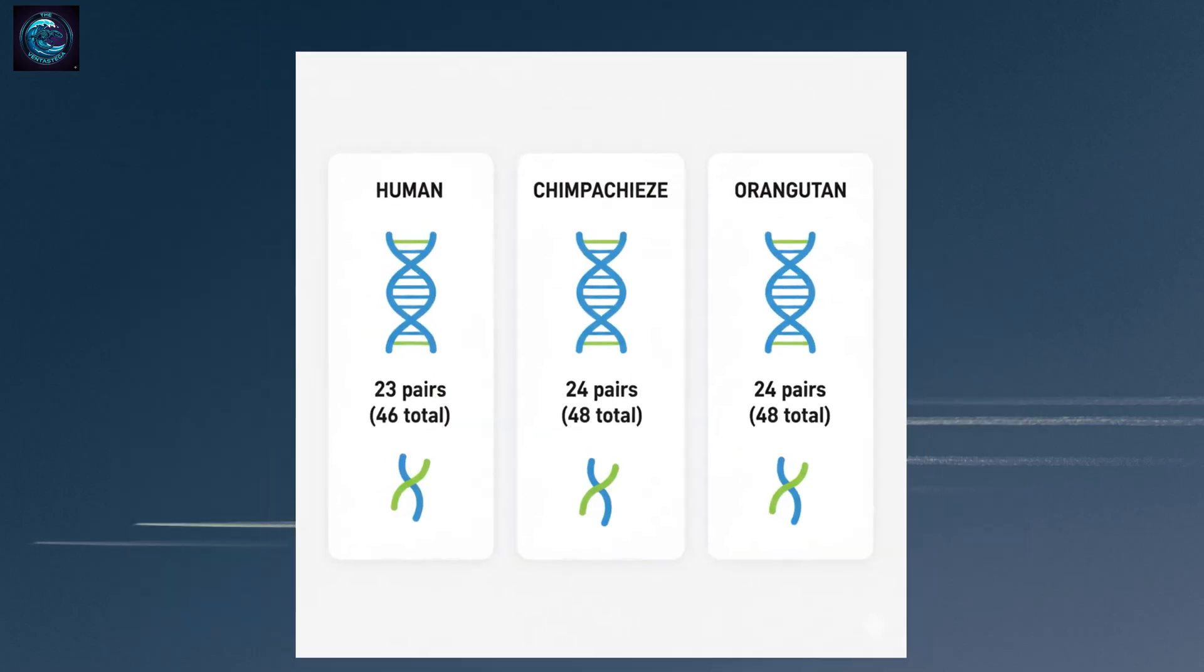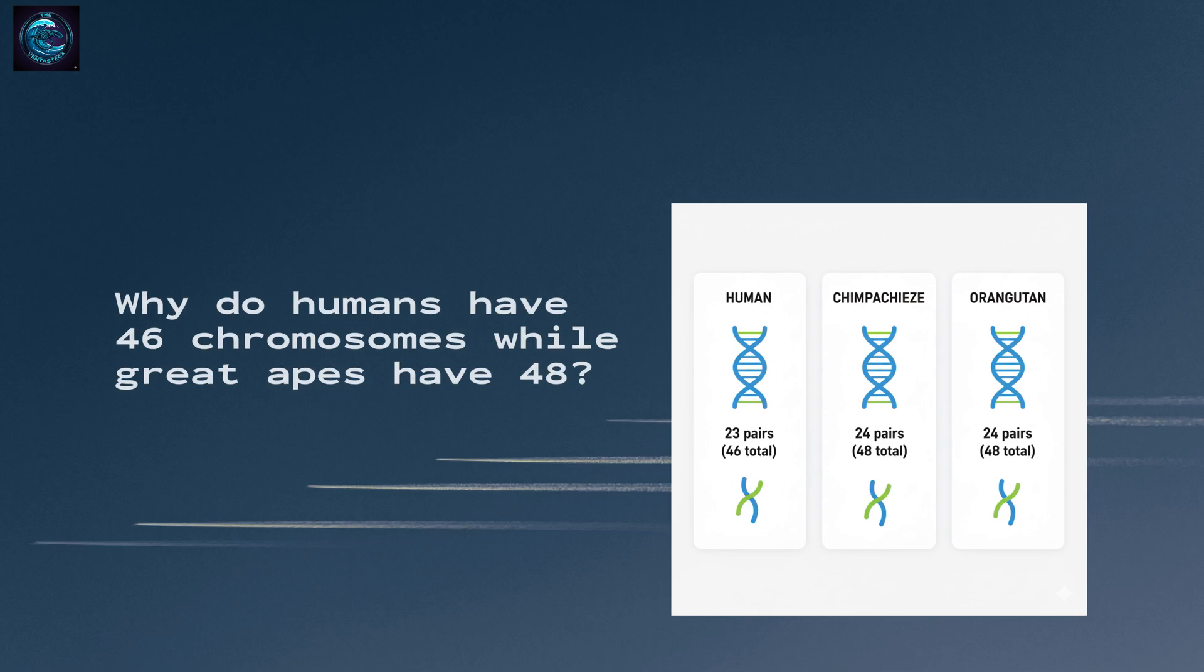But first, let's start with a mystery. Why do humans have 46 chromosomes, while our closest relatives—chimpanzees, gorillas, and orangutans—all have 48? What happened to the missing pair?